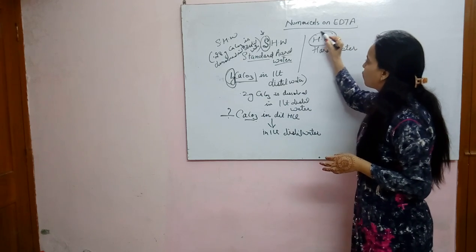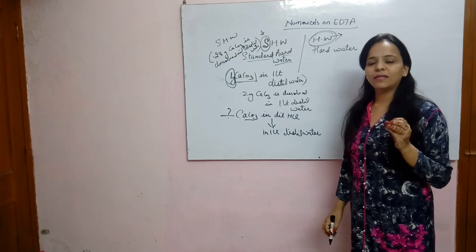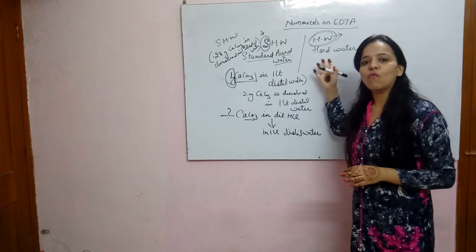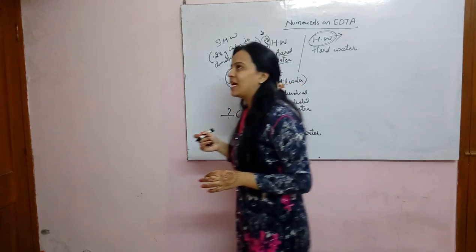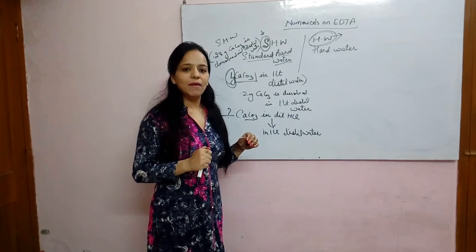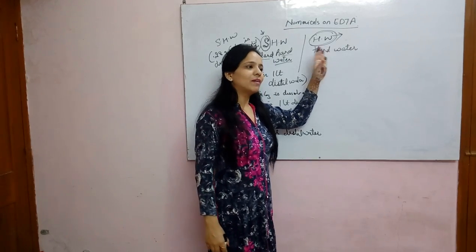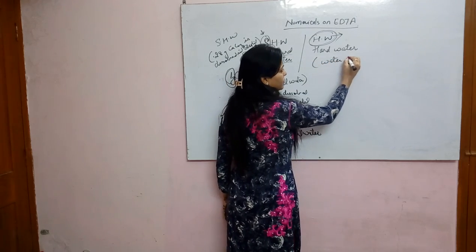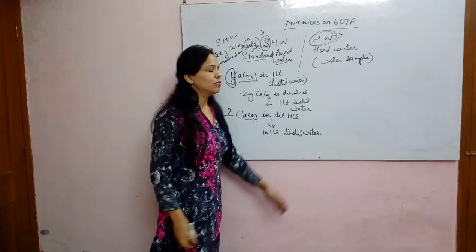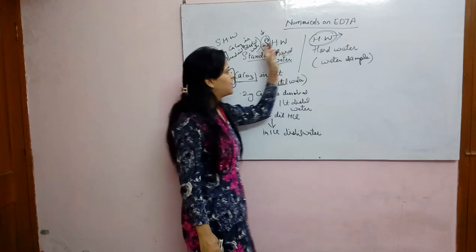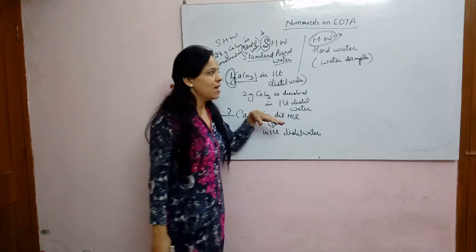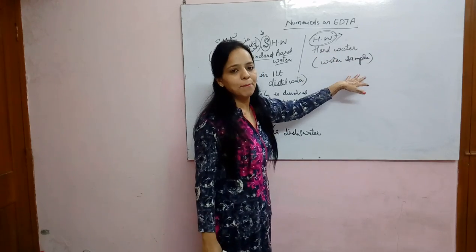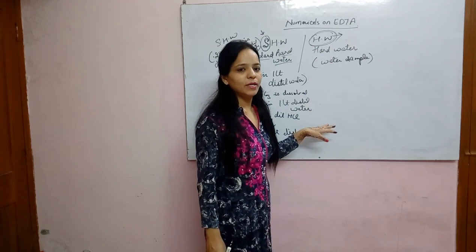Simple hard water is water which contains hardness-causing salts, but we don't know the concentration of the salts present in it. For example, tap water — when we take tap water, we don't know its concentration, so that is simple hard water. We can also call it a 'water sample' — the sample under consideration whose hardness has to be calculated.